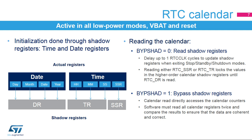The sub-second register cannot be initialized. The calendar's sub-second, time, and date registers content can be read in two different modes. When the bypass shadow registers control bit is cleared, the shadow registers are read. The advantage of this mode is that it guarantees that all three registers are consistent. Reading either RTC-SSR or RTC-TR locks the values in the higher-order calendar shadow registers until RTC-DR is read. The disadvantage is that when exiting stop, standby, or shutdown mode, the software must wait for a synchronization delay to ensure that the shadow registers are updated with the last calendar register values.